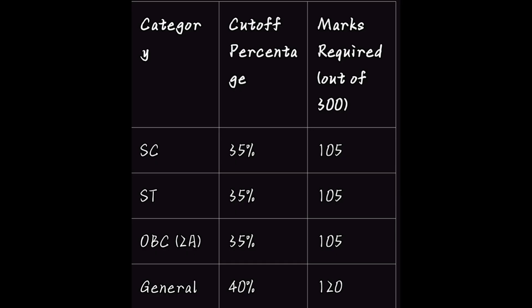Here is a quick comparison of the qualifying marks required for each category. Candidates from SC/ST, OBC, 2A, 2B, 3B, PWD, and transgender categories need 105 out of 300 marks, while general category candidates need 120 marks out of 300.